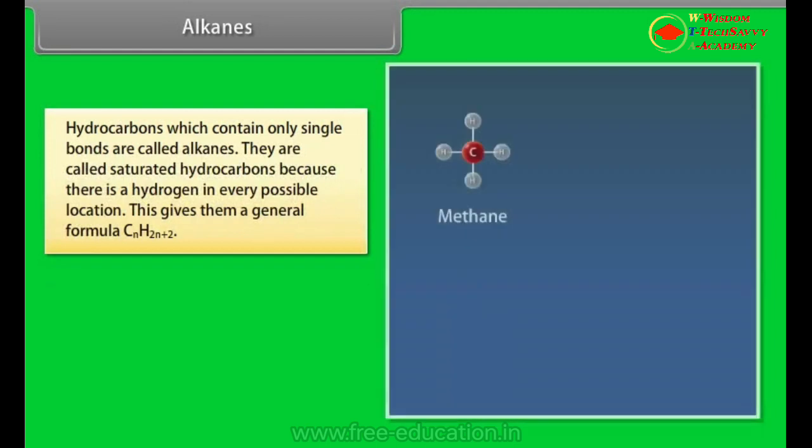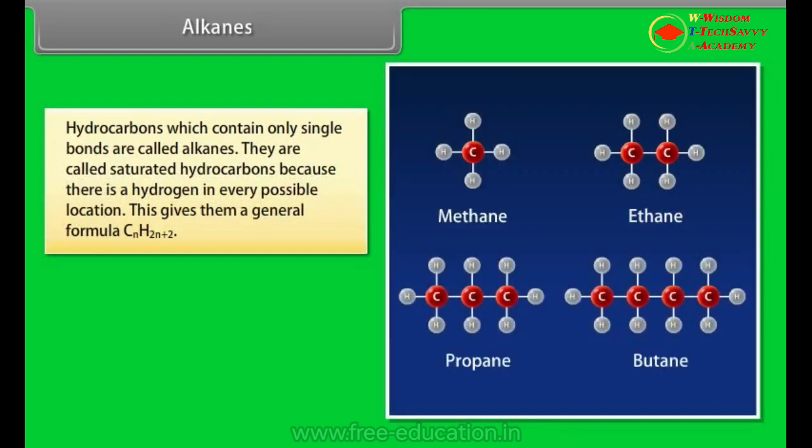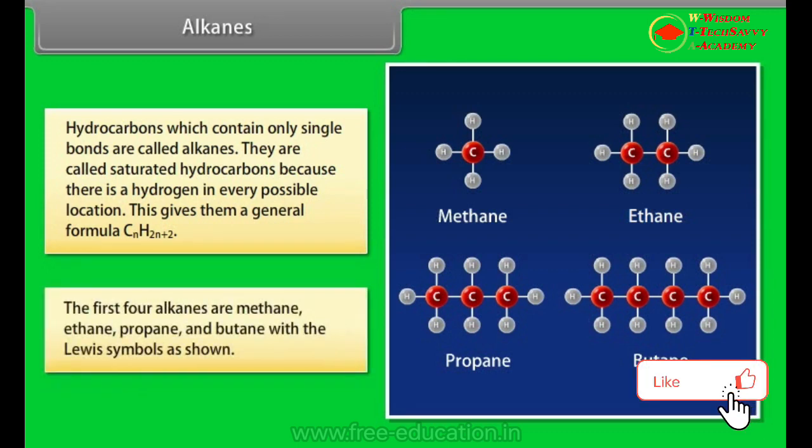Alkanes. Hydrocarbons which contain only single bonds are called alkanes. They are called saturated hydrocarbons because there is a hydrogen in every possible location. This gives them a general formula CnH2n+2. The first four alkanes are methane, ethane, propane and butane with the Lewis symbol as shown.